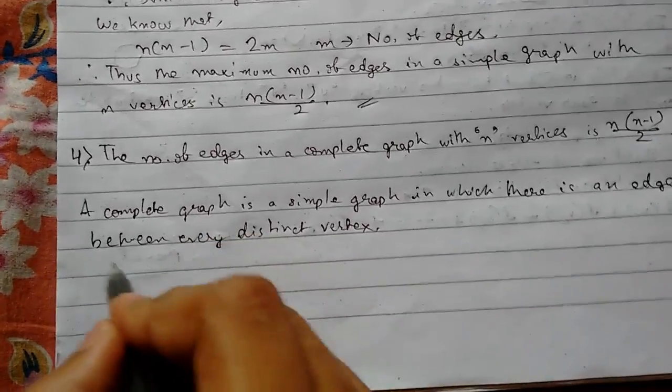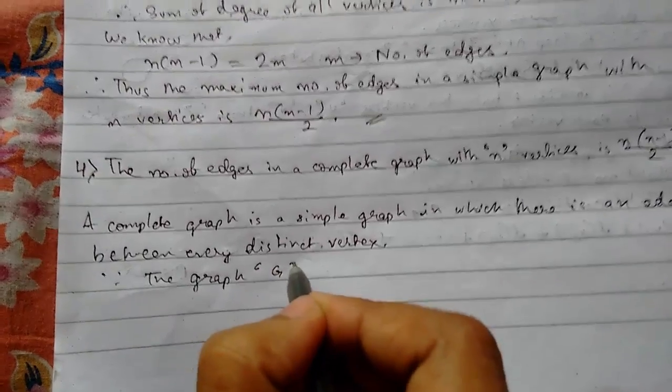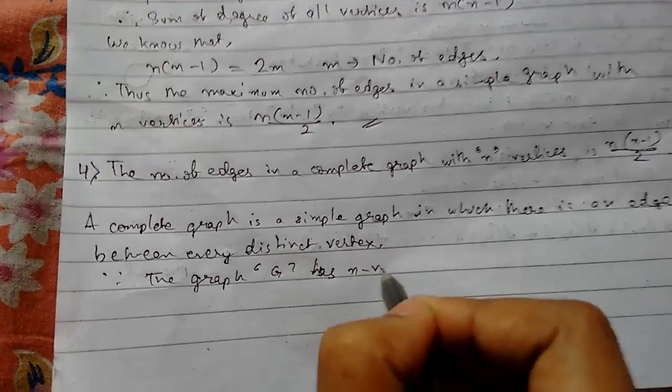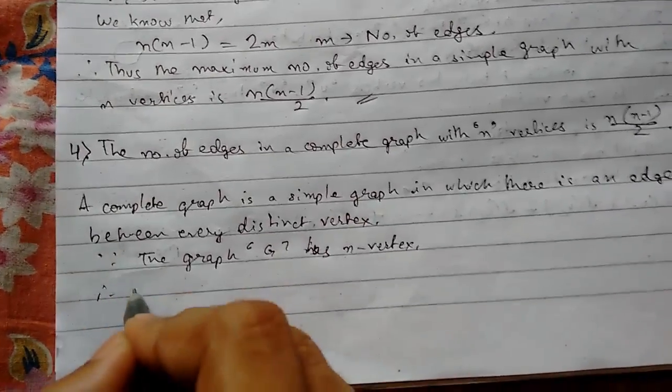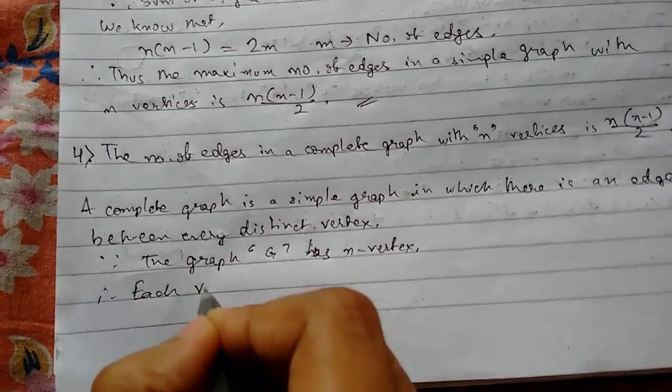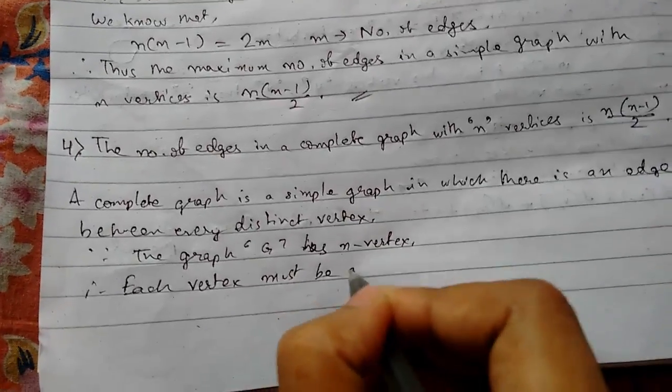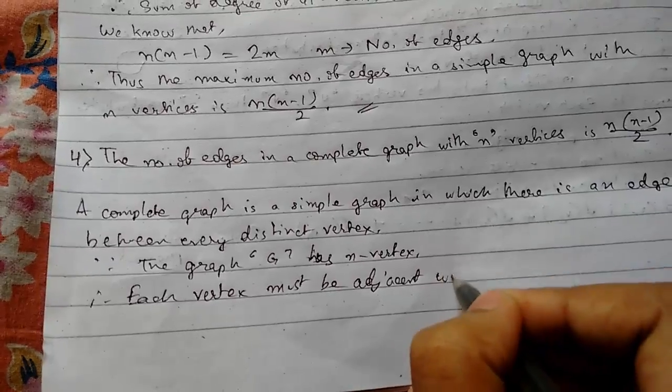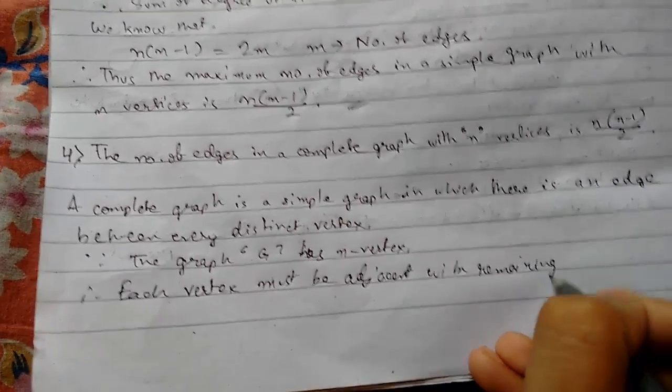Now since the graph G is complete, has n vertices. Therefore each vertex must be adjacent with remaining n vertices.